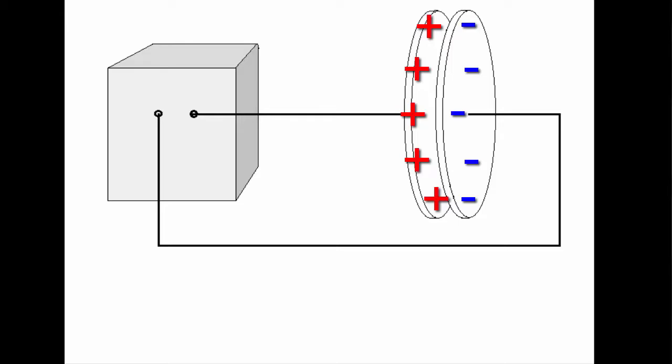There will be positive net charge on the plate that's attached to the positive pole of the voltage source and negative charge on the plate that's connected to the negative pole of the voltage source.